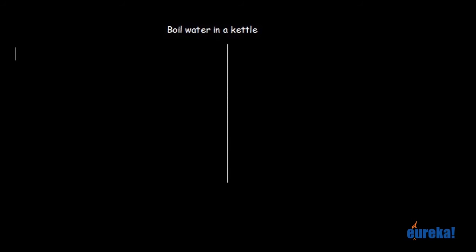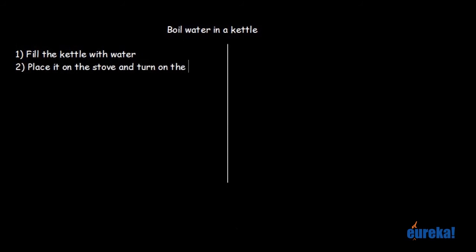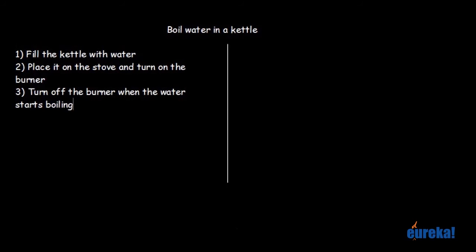Like in the previous example, let's first start with the instructions to a friend. These are pretty straightforward: one, fill the kettle with water; two, place it on the stove and turn on the burner; and three, turn off the burner when the water starts boiling. The last two steps tell you how to boil the water, and the first step tells him to fill up the kettle.